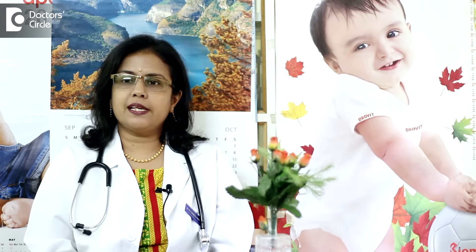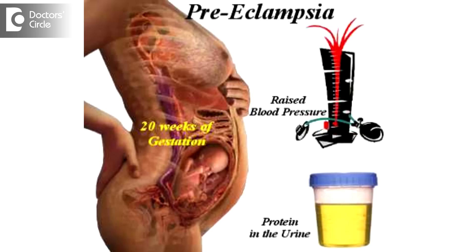In late pregnancy, the causes of pain could be accidental hemorrhage, preterm labor, labor pains itself, rupture of the uterus — that is opening of the previous caesarean section scar or of the previous myomectomy scar — acute polyhydramnios, severe preeclampsia, eclampsia, torsion of the uterus, and liver failure.